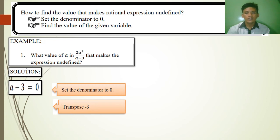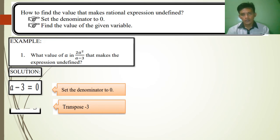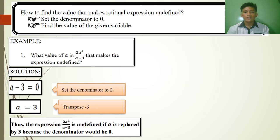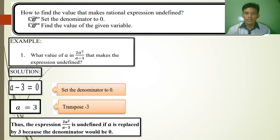Transpose negative 3 to the other side. Negative 3 becomes positive 3. Therefore, A is equal to 3. Thus, the expression 2A squared over A minus 3 is undefined when A is replaced by 3, because the denominator becomes 0.